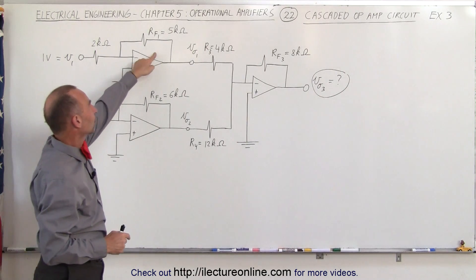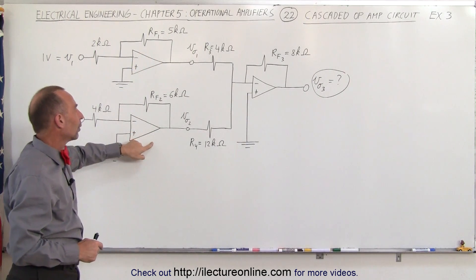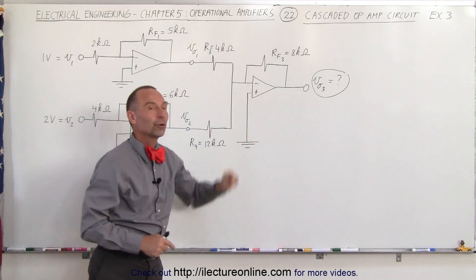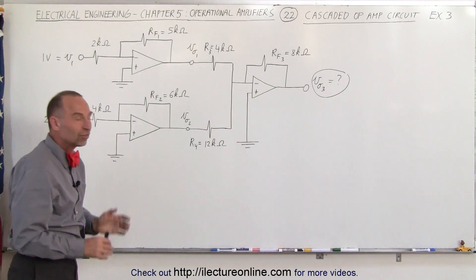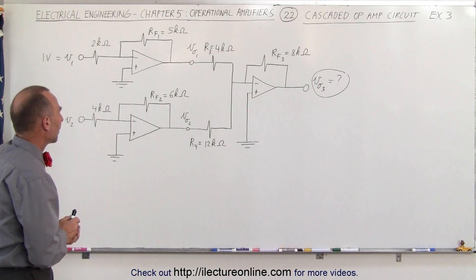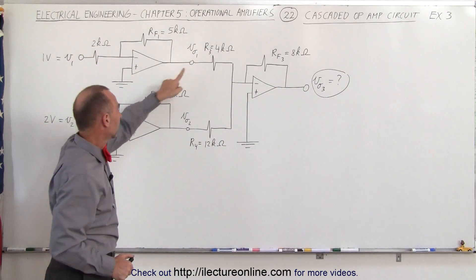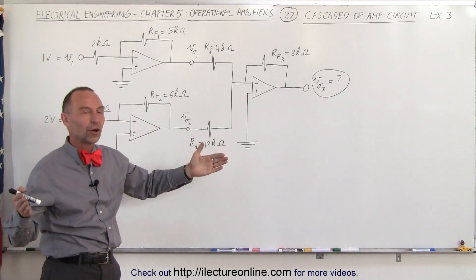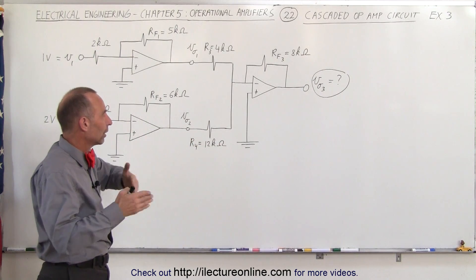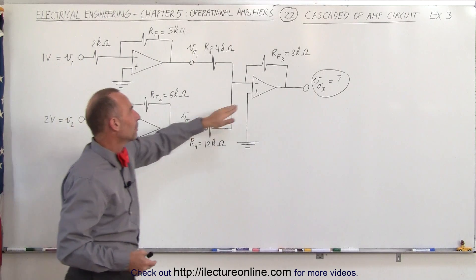The output of the first one plus the output of the second one is fed into the third operational amplifier, but it's still what we call a cascaded op-amp circuit. So what we need to do is figure out the output of the first circuit, the output of the second circuit, and then realize that those are added in an addition circuit to the input of the third one.